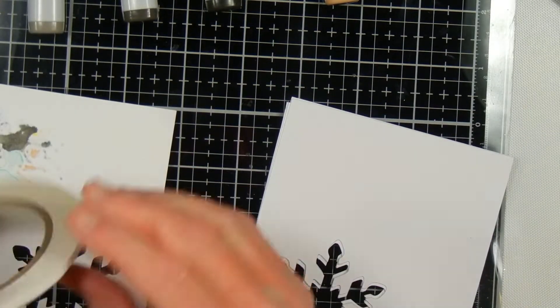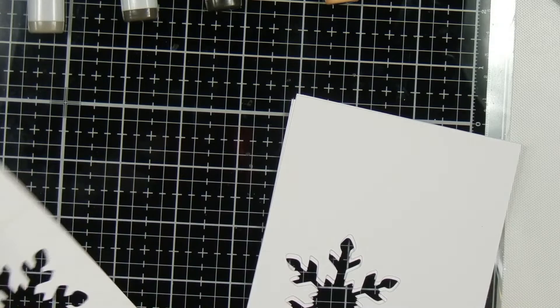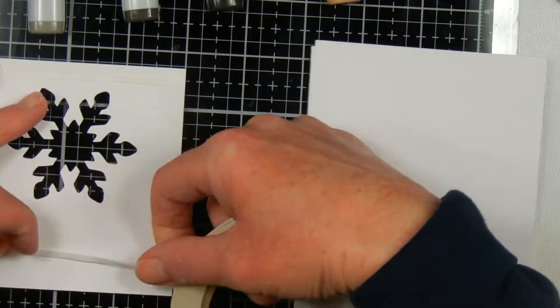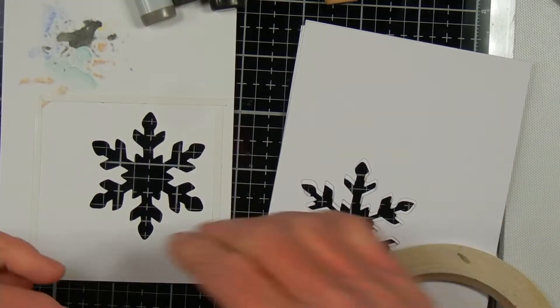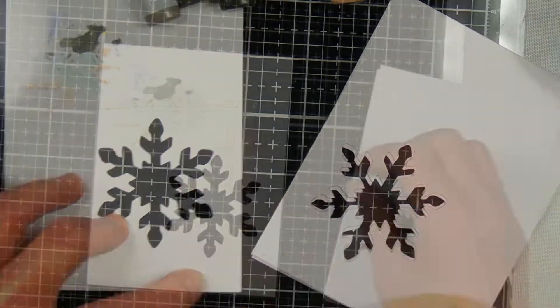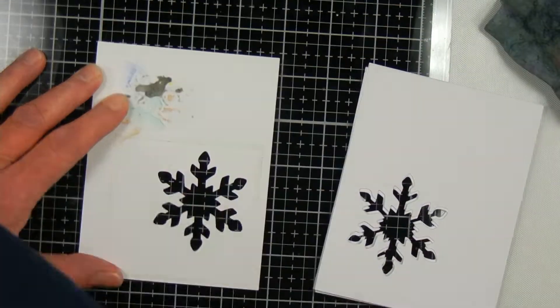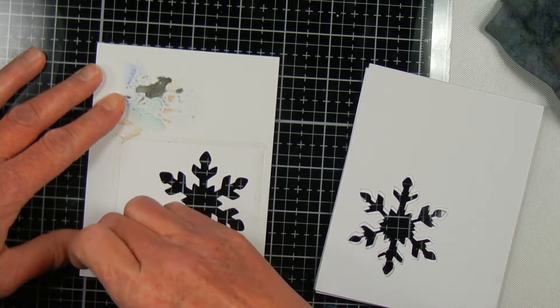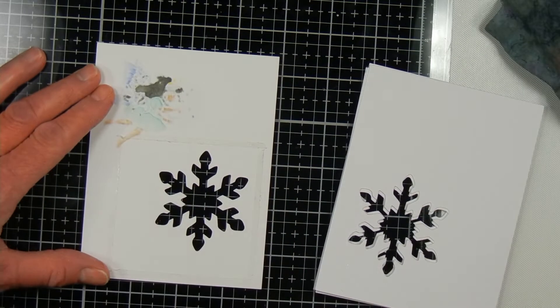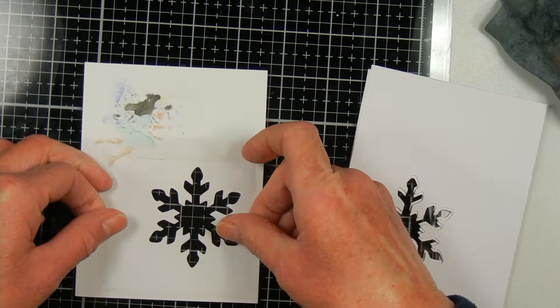I'm going to make this into a shaker card, so I'm putting some eighth inch score tape around the snowflake. I've already cut a square piece of acetate from leftover packaging and I'm adhering that to the back of the snowflake.